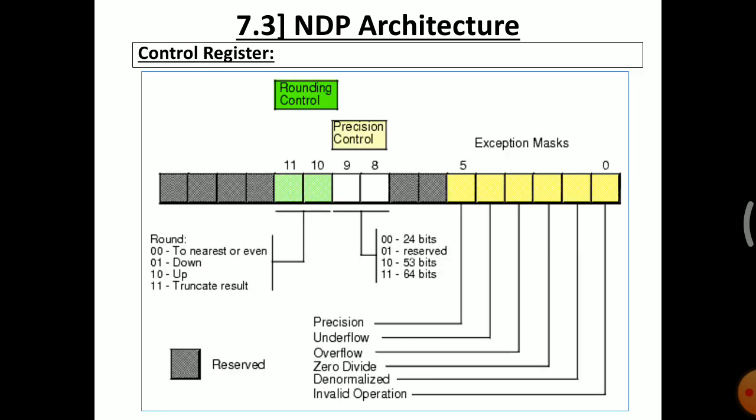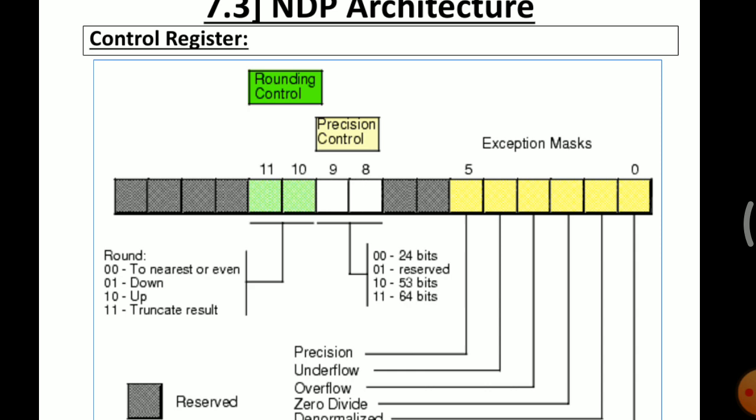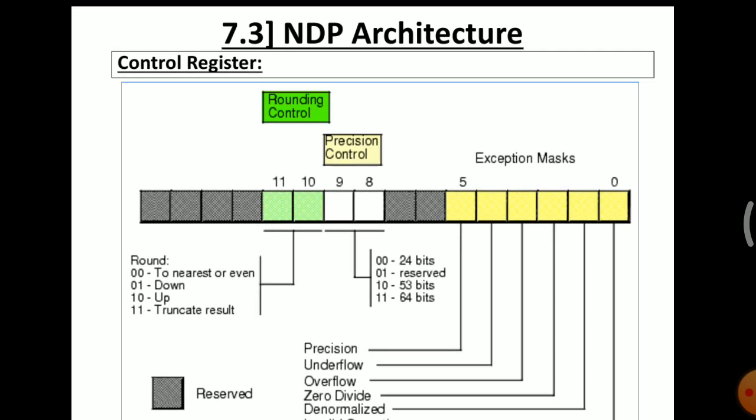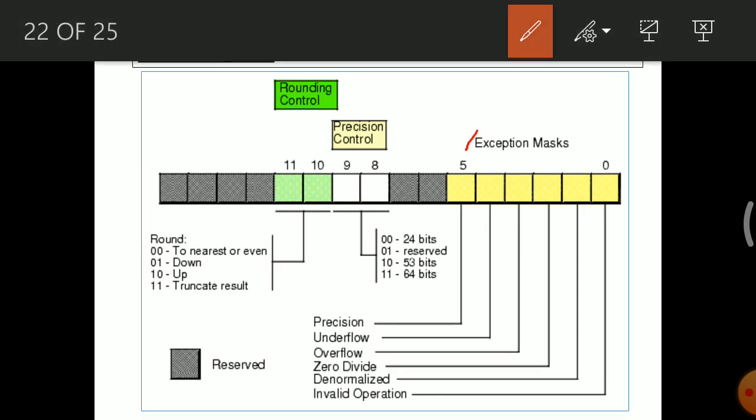The control register is another 16-bit register in the control unit. The exception flag bits from bit 0 to bit 5 are exactly the same as in the status register: bit 0 is invalid operation, bit 1 is denormalized, bit 2 is zero divide, bit 3 is overflow, bit 4 is underflow, and bit 5 is precision. The control word controls operations by setting or resetting certain bits.